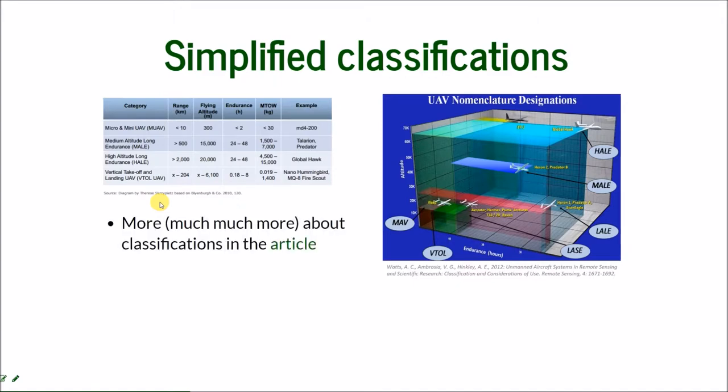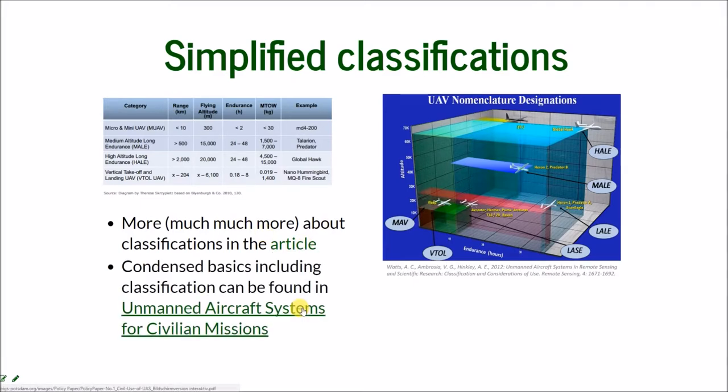There is much more about the classifications in the article when you click the link. And I recommend the article about classification here. It's not a research paper. It's short and it clarifies a lot of the confusion about what's the meaning, small, medium, high endurance, low altitude, and explains all the shortcuts that are essential.